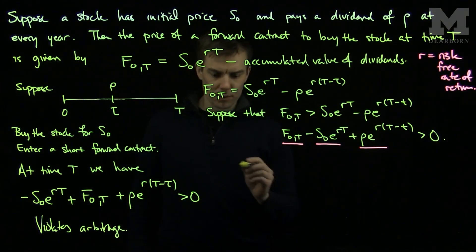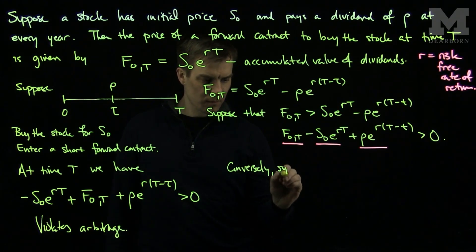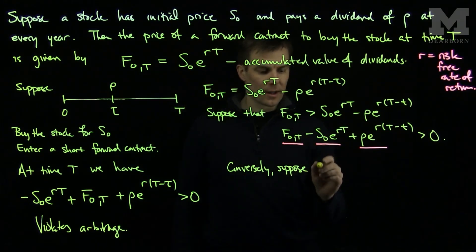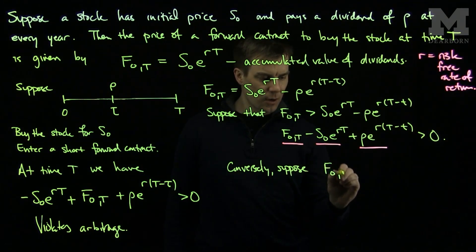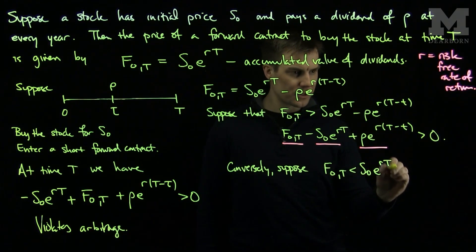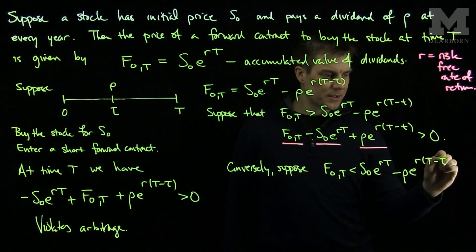Conversely, let's suppose that the opposite equality is true. Let's suppose that F0T is strictly less than S0 e to the rT minus rho e to the r(T-tau).